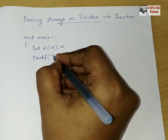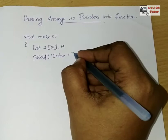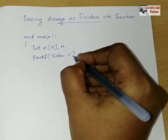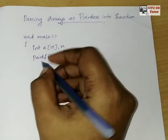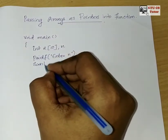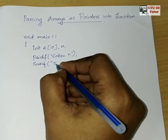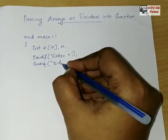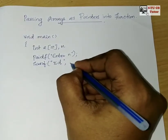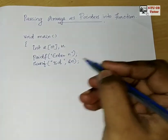Then for the variable n, we need to read a value. So using printf, I will print 'Enter value of n' or 'Enter the size of array' — you can give any message you like. Then reading it by using the scanf function with ampersand n.